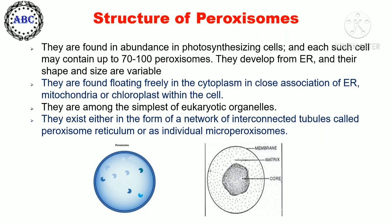In terms of structure, peroxisomes are found in abundance in photosynthesizing cells, and each such cell may contain up to 70 to 100 peroxisomes. They develop from the endoplasmic reticulum, and their shape and size are variable.